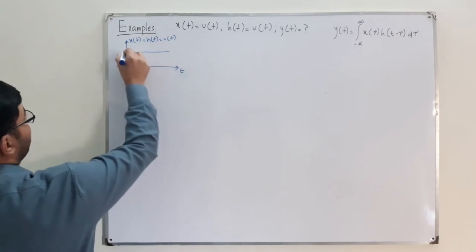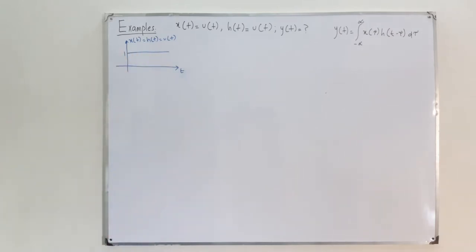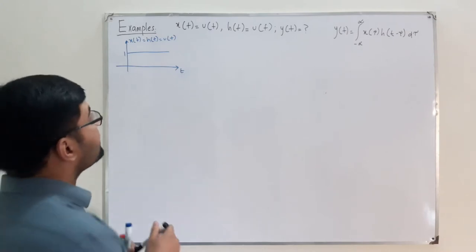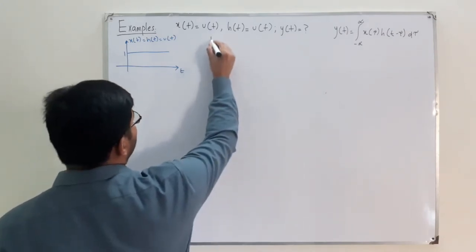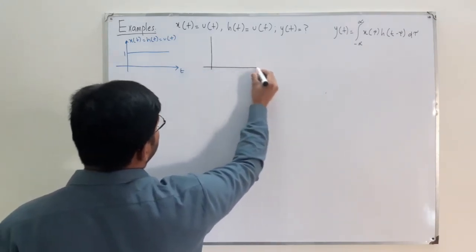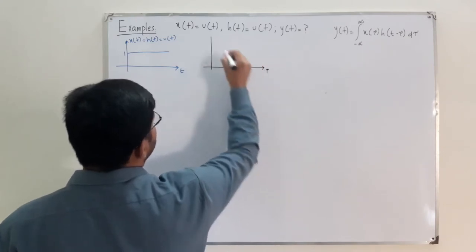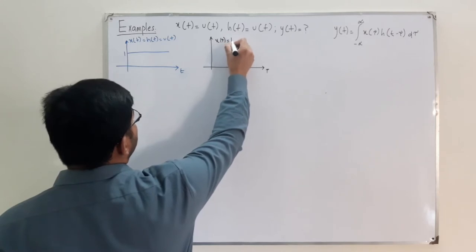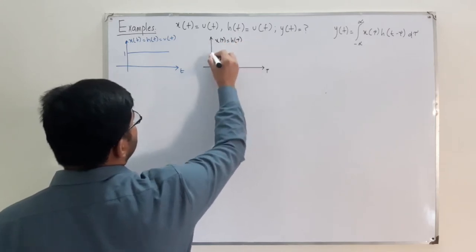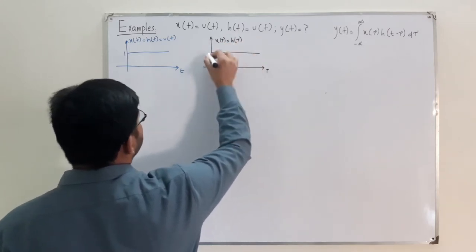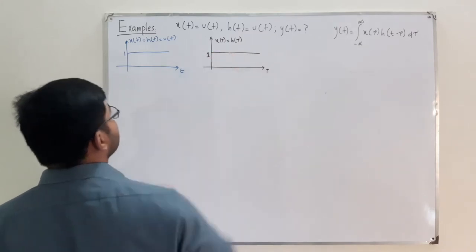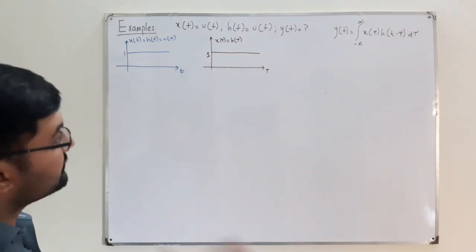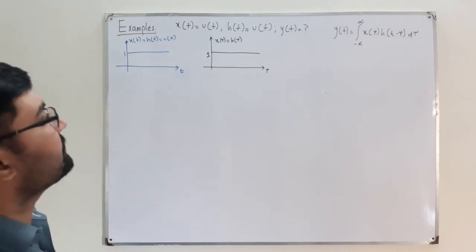The next step is to change the variable. We now have x(τ) and h(τ). On the tau axis, x(τ) = h(τ) = u(τ), which looks like this — a unit step starting at zero.